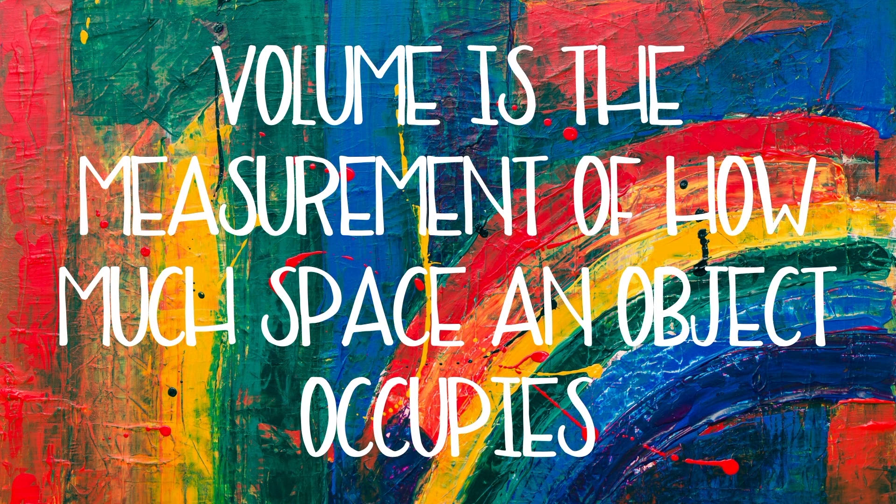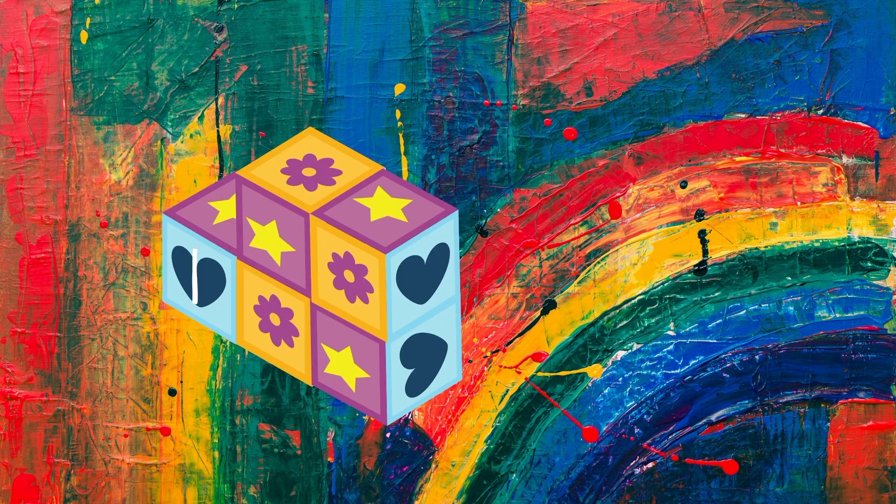What is volume, and how do you find it? Well, Mathling, I am so glad you asked because everybody's been talking about it. Volume is the measurement of how much space an object occupies. It's an object's capacity, or a measurement of how much it can hold. It's measured in cubic units, and sometimes you can actually count those units.